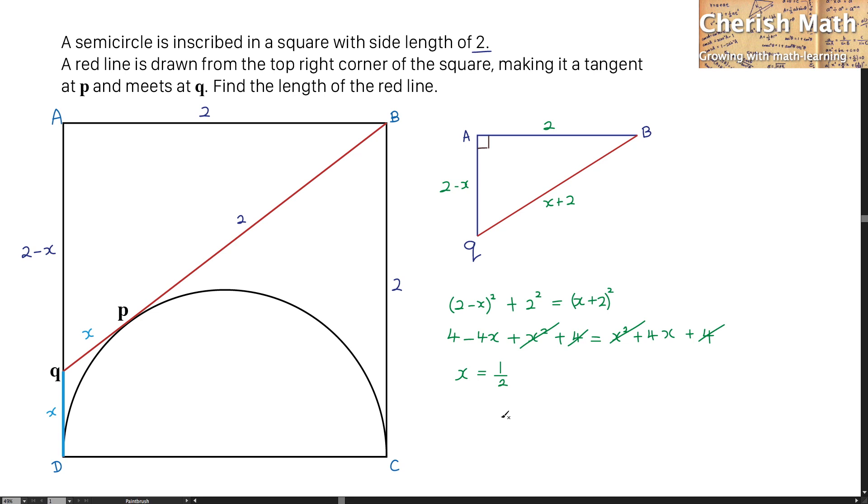For the final part, I'm going to find the length of the red line, that is BQ. I'm going to use the length of BP, which is 2, plus the value of X, which is 1 half. So the value that we are getting here is 2.5 units.